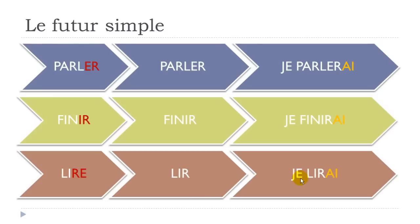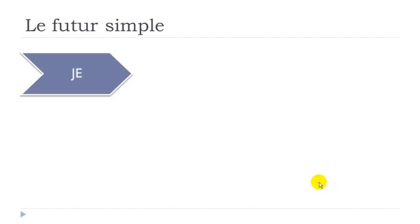Example with 'parler' (to speak), first group: 'je parlerai,' 'tu parleras,' 'il parlera,' 'elle parlera,' 'nous parlerons,' 'vous parlerez,' 'ils parleront,' 'elles parleront.' Just keep the basic form and add the endings.